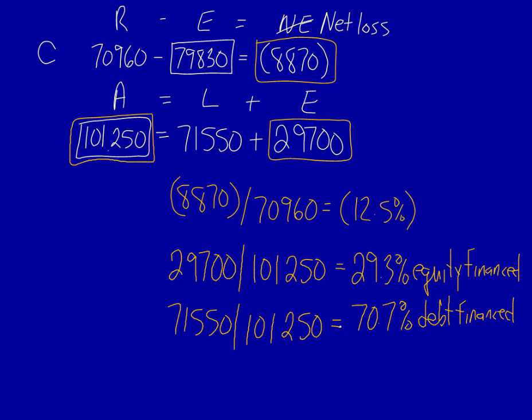Company C has far more debt financing. Because of that, we know they already have a lot of debt that they are servicing by paying interest. We know that Company C will be riskier to lend money to than Company B. Company B appears to have a better ability to repay the loan over the long term, as well as service the loan by paying interest.